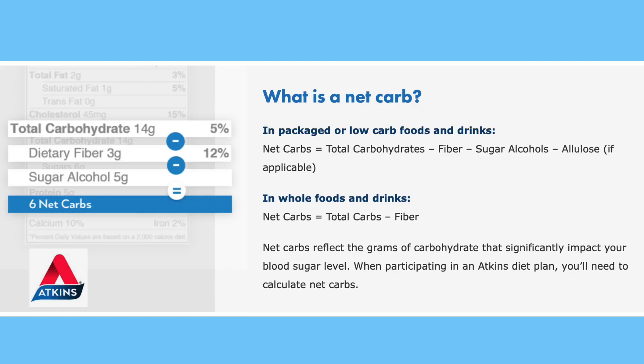The fact that they subtract allulose was something that I hadn't seen before. So I checked out the Atkins website, and sure enough, this is what's on the Atkins website: net carb is total carbs minus fiber, minus sugar alcohol, minus allulose.